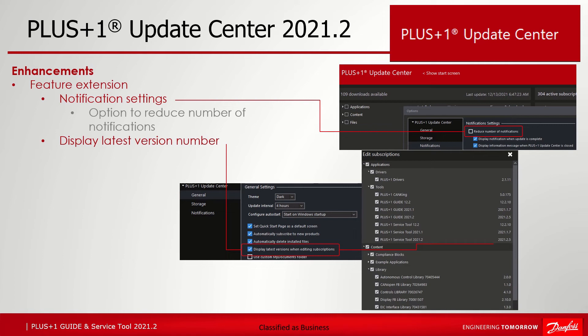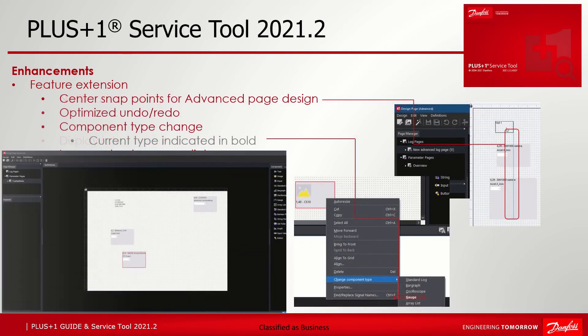Another new checkbox option has been added under General: 'Display latest versions when editing subscriptions.' When this checkbox is checked, the latest available version for each product in the edit subscription tree is shown right-aligned on the right side of each node that represents a product.